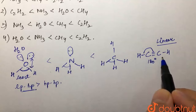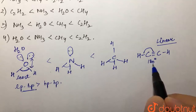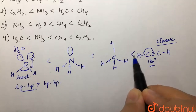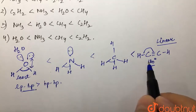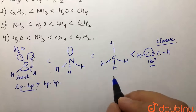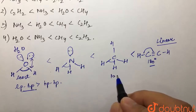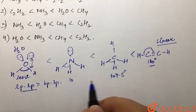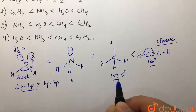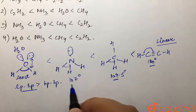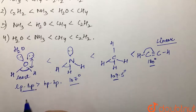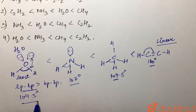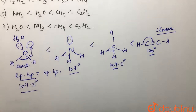C2H2 is linear at 180 degrees, so that is the maximum of all. For the tetrahedral cases: methane has 109.5 degrees with no lone pair; ammonia has one lone pair so its bond angle is less than 109.5, which is 107 degrees; and water has 104.5 degrees, the least bond angle, because it has two lone pairs.